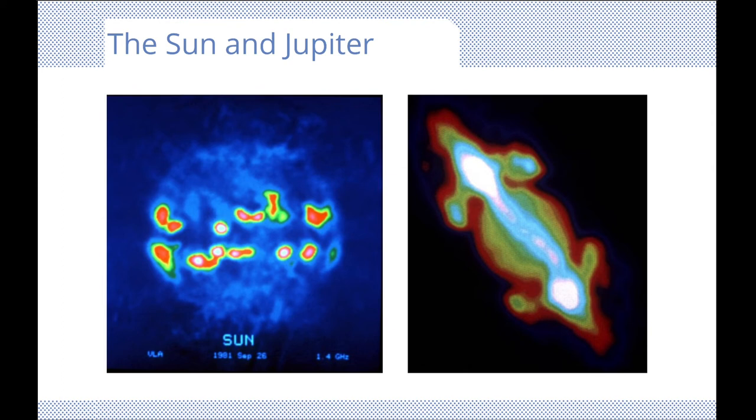If the sun was suddenly switched off, the planets would remain radio sources for a long time, slowly fading as they cooled.